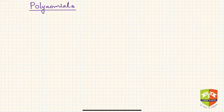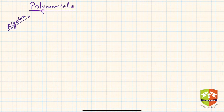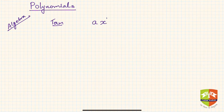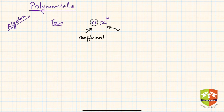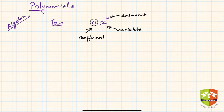Let's do a quick overview on polynomials, starting with the very basic concept in algebra. The first thing you would have learned in algebra is something called a term. A term is of the form a times x to the power n, where a is called the coefficient of the term, x is the variable — it need not be x, you can use any alphabet — and n is called the exponent or power.